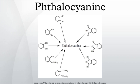Halogenated and sulfonated derivatives of copper phthalocyanines are commercially important. Such compounds are prepared by treating CuPc with chlorine, bromine, or oleum.